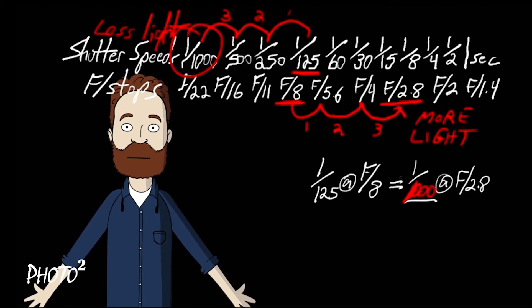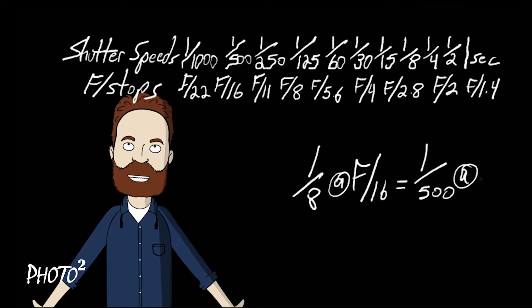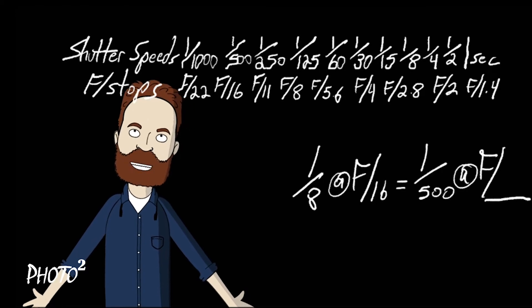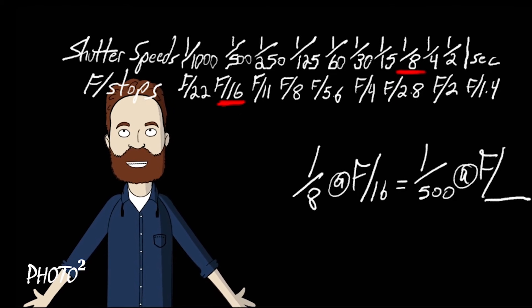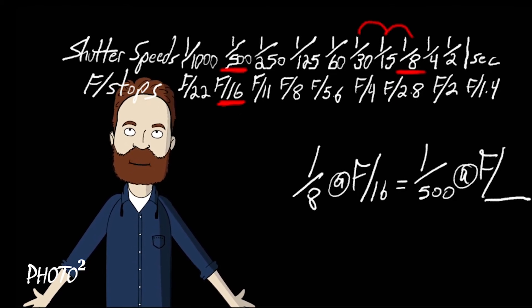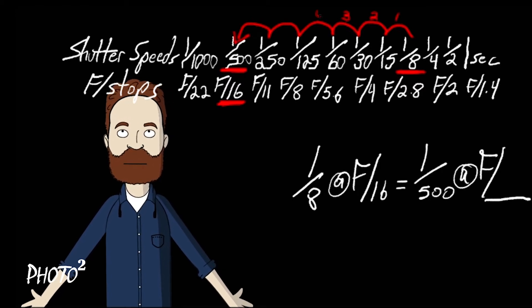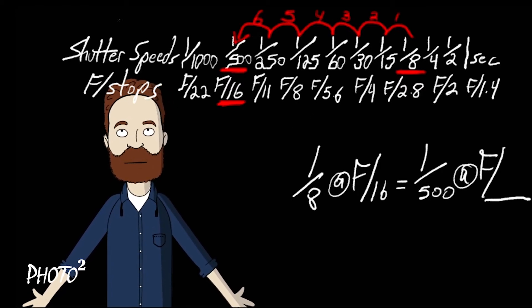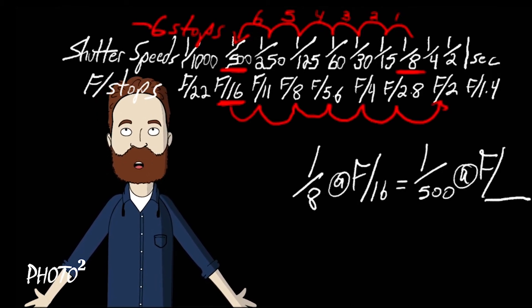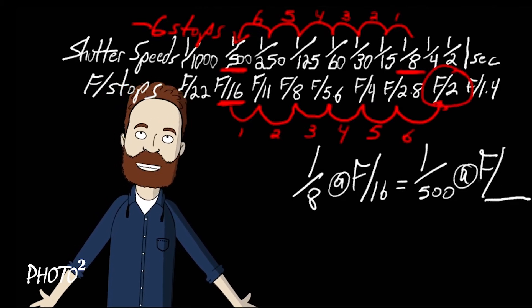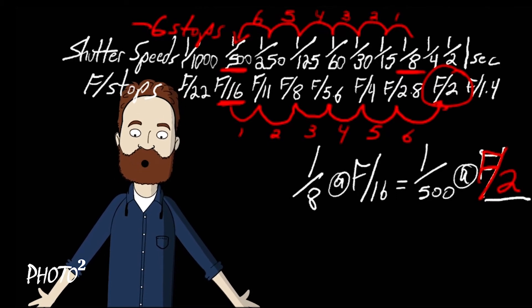Let's try another one. Let's go with one eighth at f/16 equals one five-hundredth at f what? Obviously we want to freeze something, right? Change our shutter speeds from one eighth to one five-hundredth. Mark it on your scale so you don't get confused. One eighth at f/16, and then count the direction you're going. One, two, three, four, five, six. Six stops less light. So in order to balance out the equation we need to have six stops more light on the f-stop scale, which is going to be f/2. So not only did I freeze something, but I also attained a very shallow depth of field with that second choice of shot.